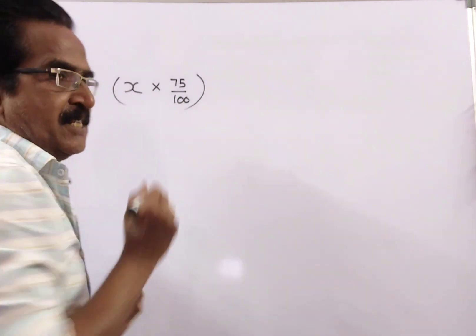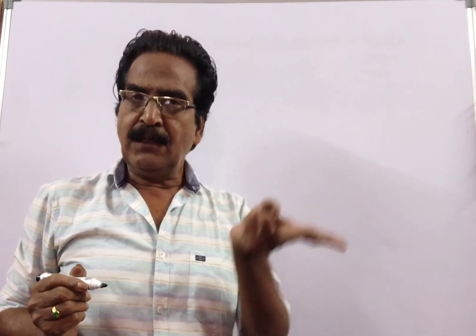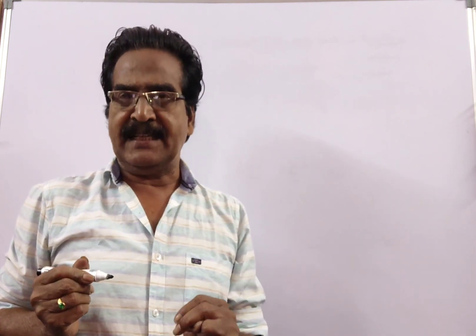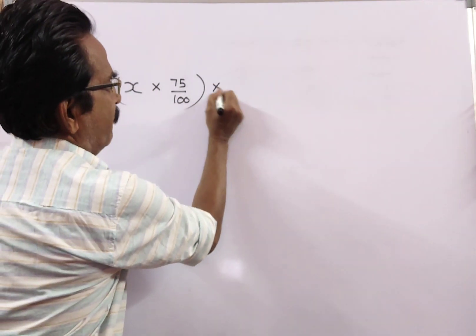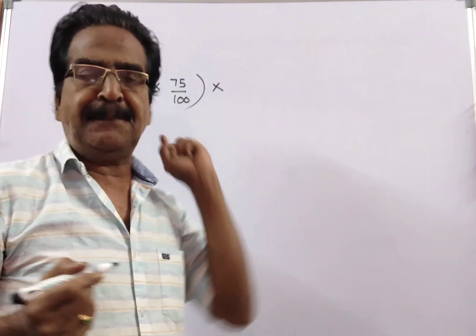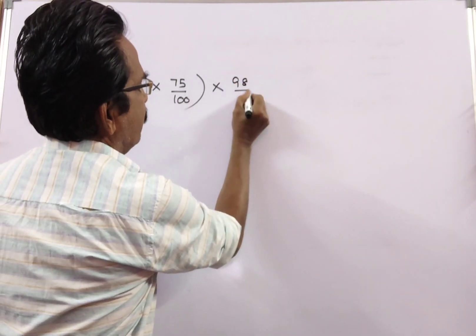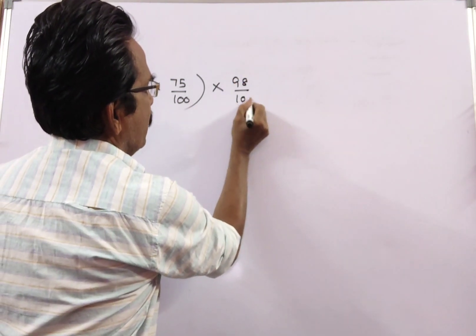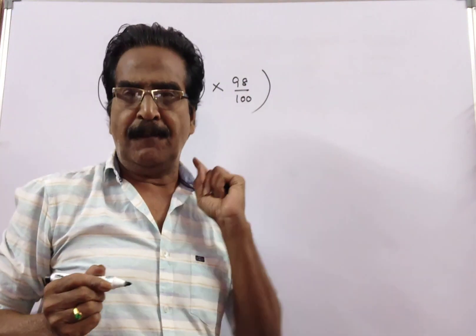2% of the votes were declared invalid. So the number of valid votes is equal to 98% of the votes polled. This is the valid votes polled.